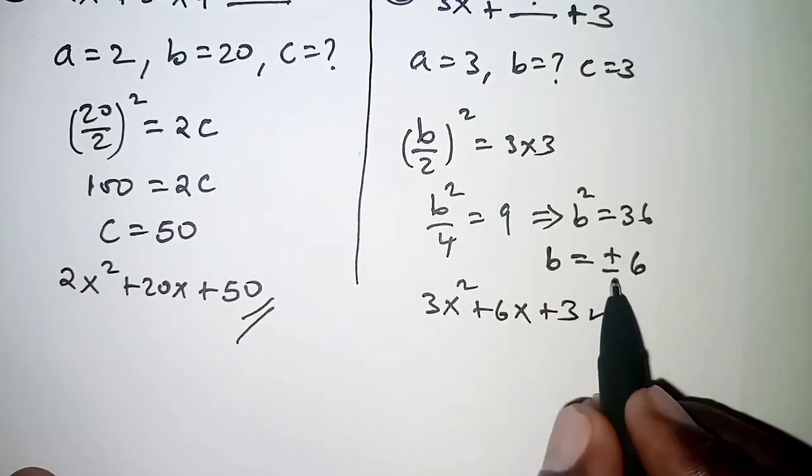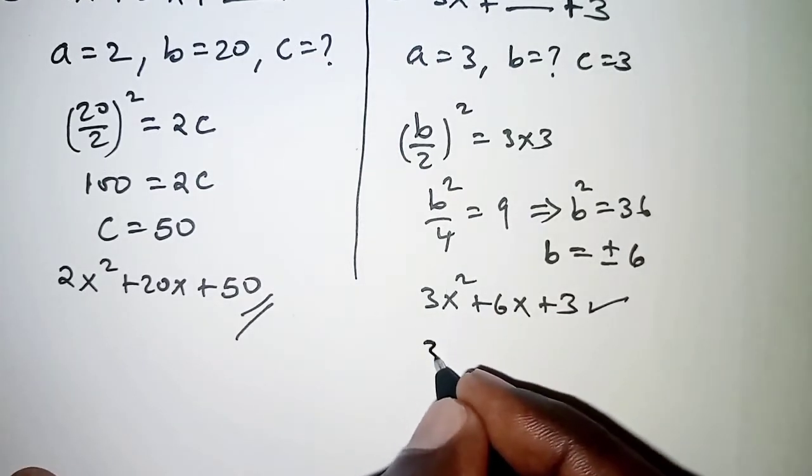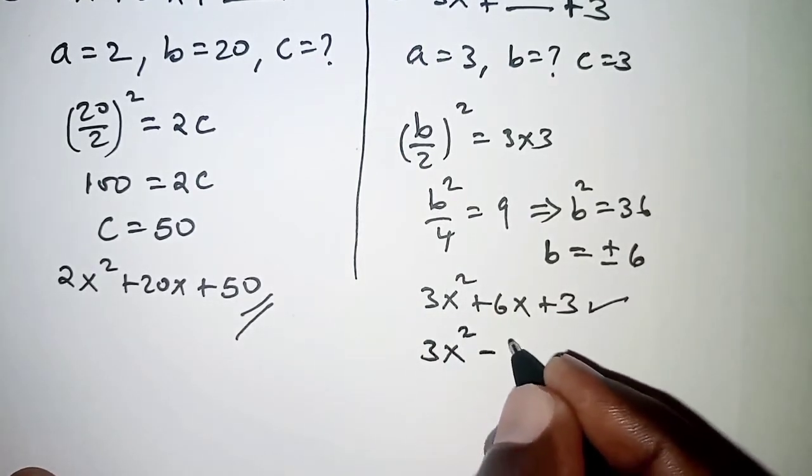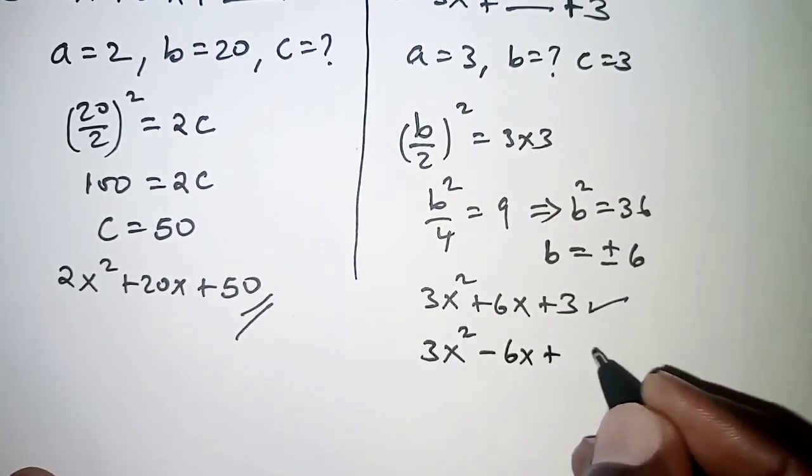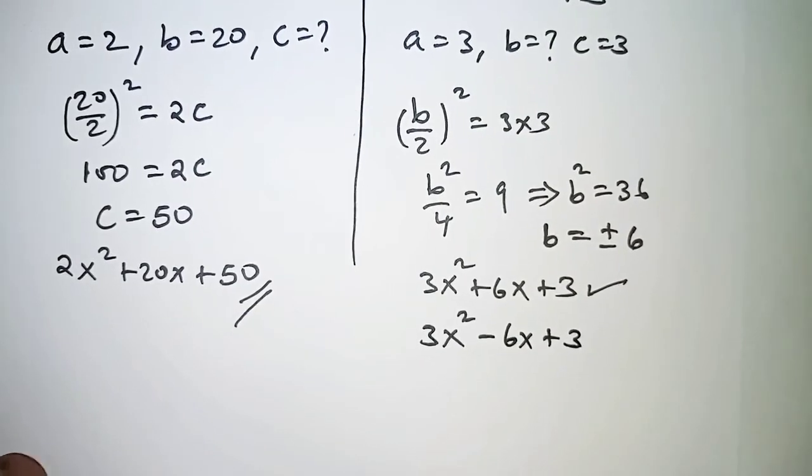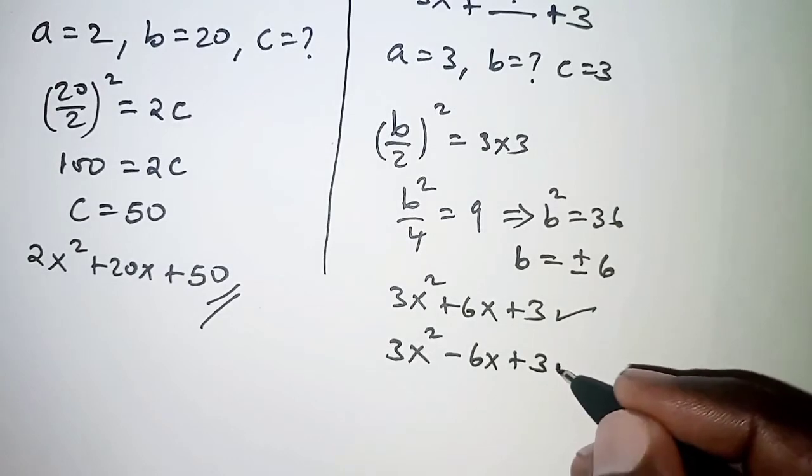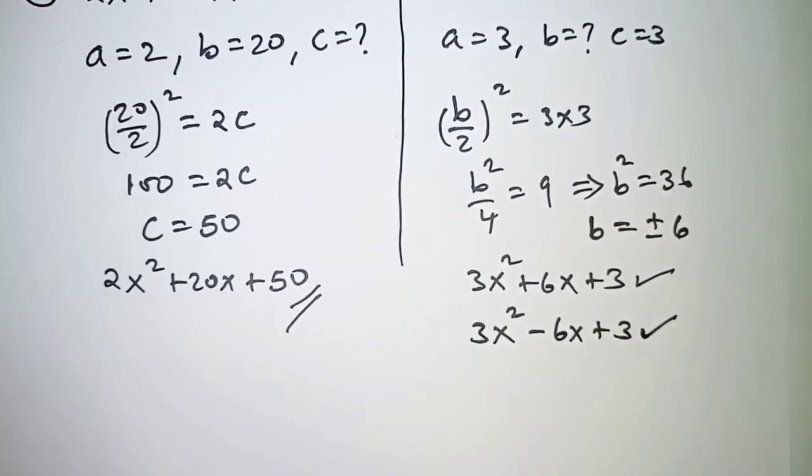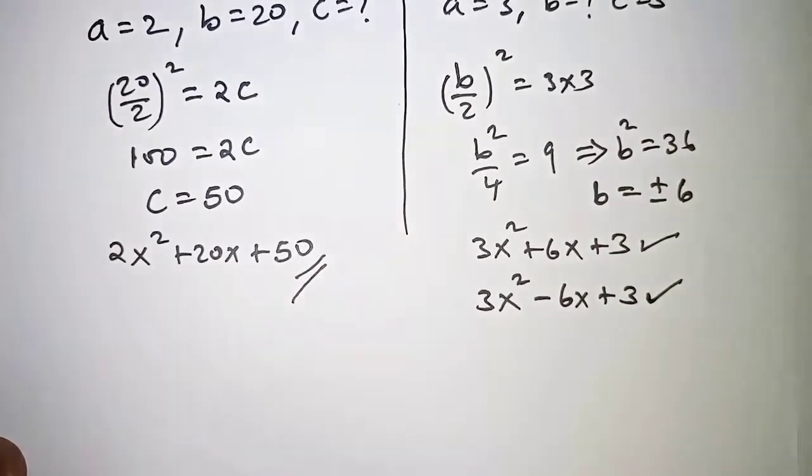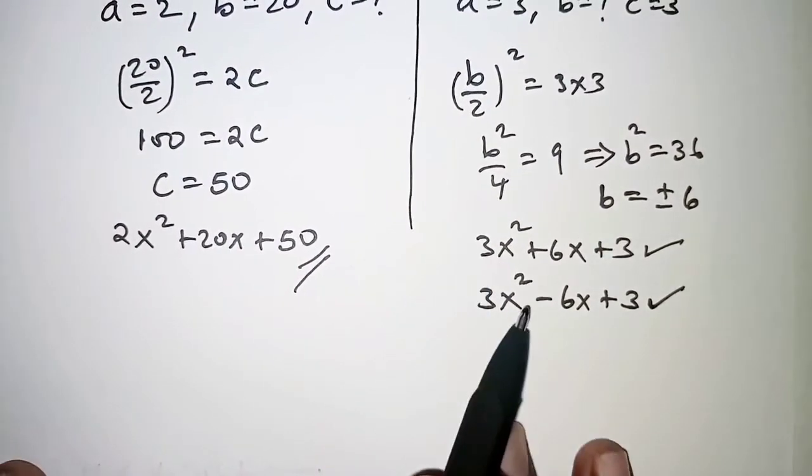The second one, you can consider negative 6, so that we have 3x² - 6x + 3. So that one also is a perfect square. When we get the missing term we say we have completed the square.